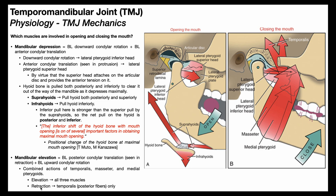For the superior movement of the mandible during mouth closing — elevation — this involves the combined action of all three muscles: temporalis, masseter, and medial pterygoids. Specifically for elevation, it is mainly the anterior fibers of the temporalis that contribute. However, for the posterior movement of the mandible during mouth closing — retraction — this involves only the posterior fibers of the temporalis. Not the masseter, not the medial pterygoids, and not the anterior fibers of temporalis: only the posterior fibers of temporalis.